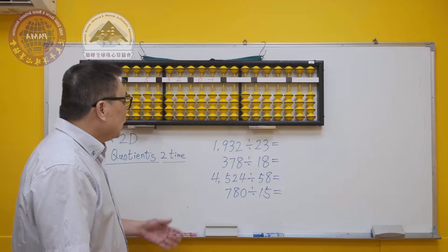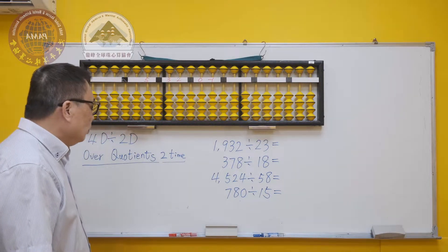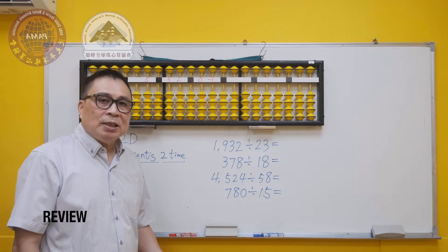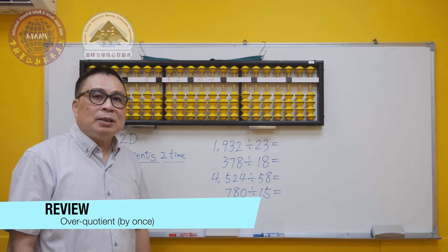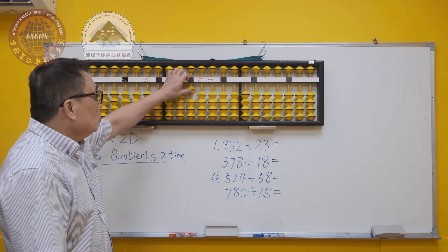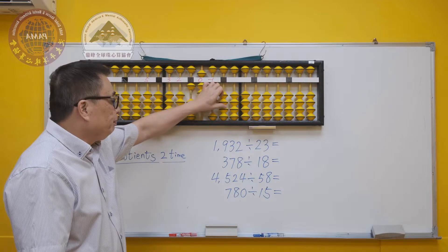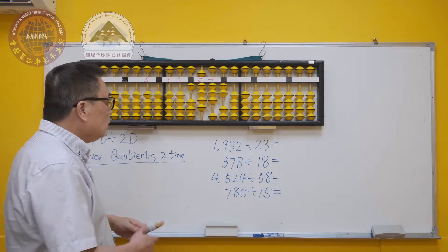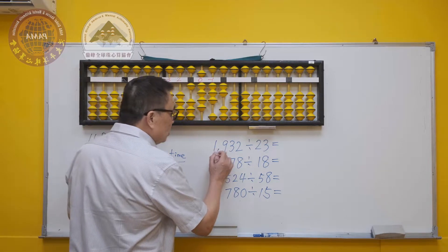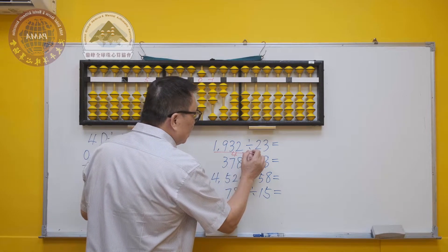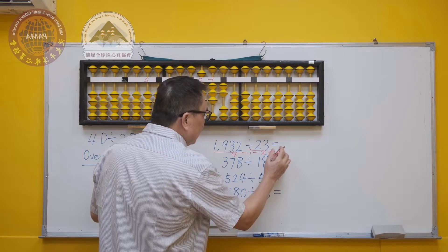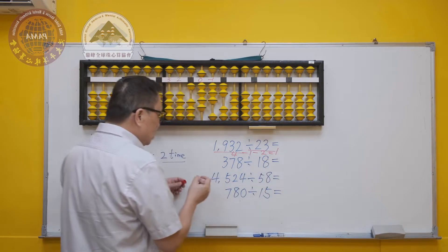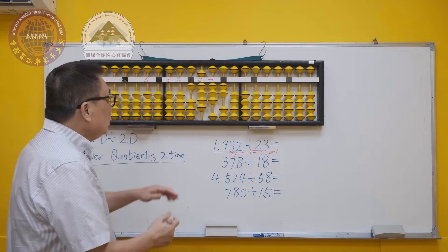In the previous unit, we mentioned about over-quotient by once. So please allow me to revise these questions. First of all, the starting point is 4 minus 1 and minus 2, which gives you 1. Place the dividend on the starting point 1 on the abacus.